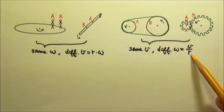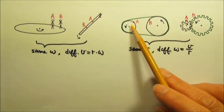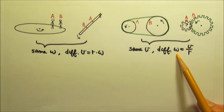And since omega is v over r, and they have the same speed but different r, A and B have different omega.